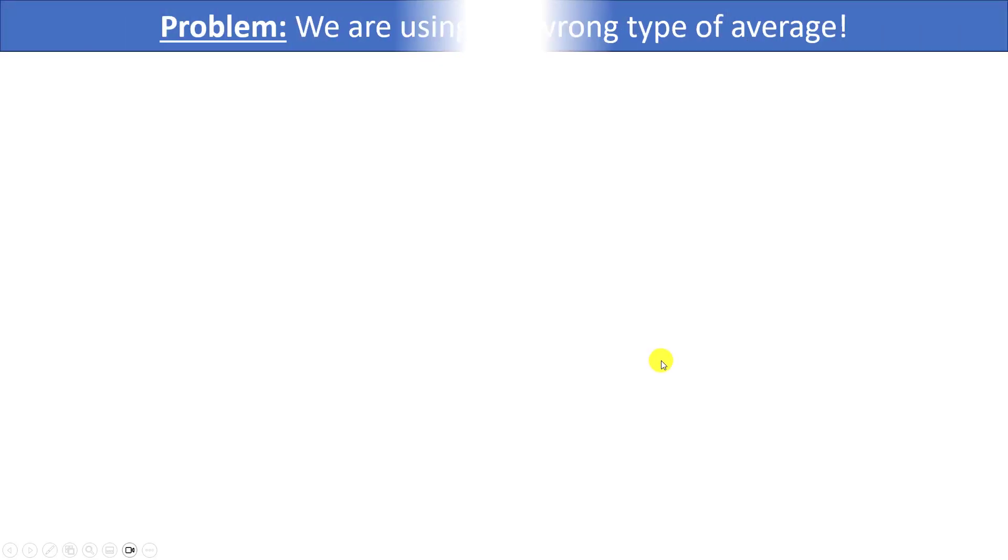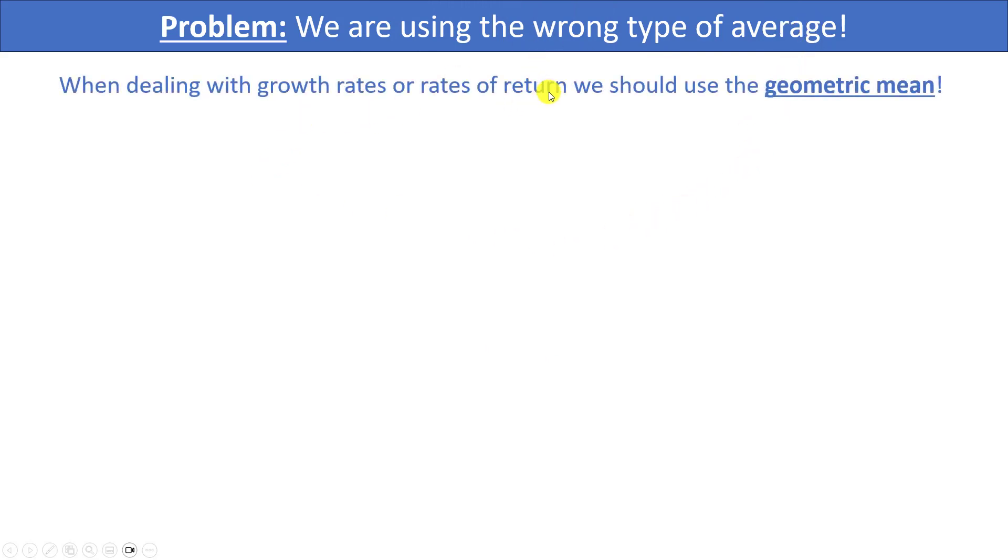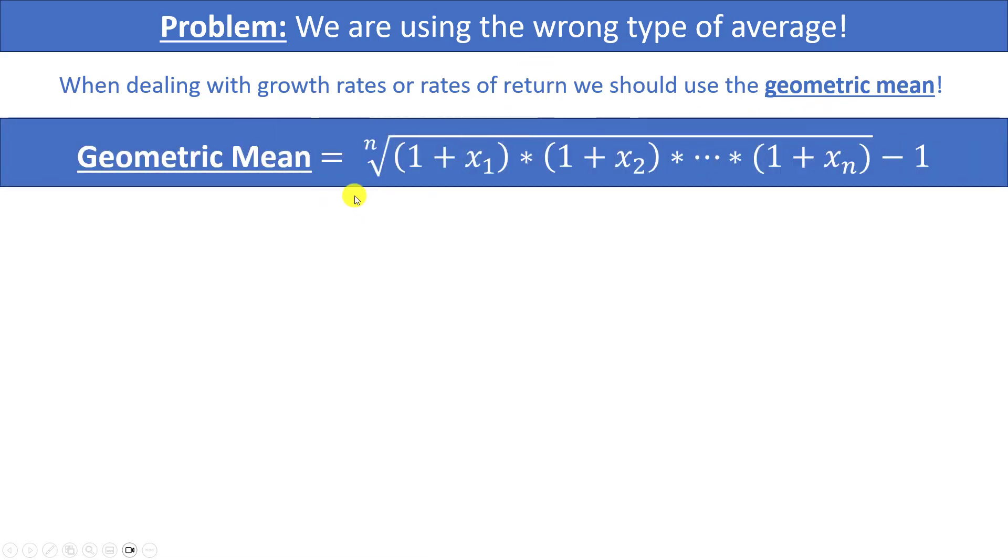The problem is we are using the wrong type of average. When dealing with growth rates or rates of return we really should be using the geometric mean. So here is the formula for the geometric mean. Remember the arithmetic mean takes all the values and adds them together and then divides by how many values that you have. On the other hand, the geometric mean tells us to take 1 plus each of our growth rates or rates of return, multiply them all together, and then take the nth root. At the very end we also have to not forget to subtract 1. n is the total number of values or your sample size and x is going to represent each value or rate of return or growth rate.